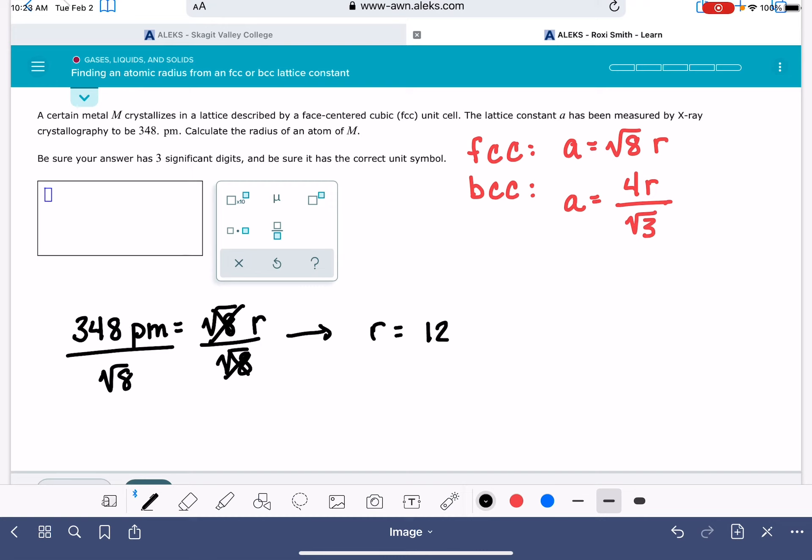This says three significant figures, so 123. Make sure that it has the correct symbol, so you're going to need to keep that unit symbol 123 picometers.